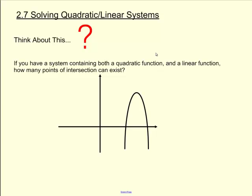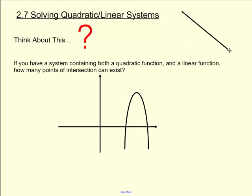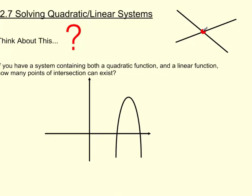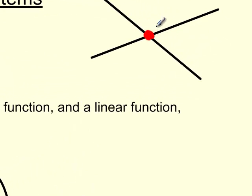There are a couple of possibilities. You could have two lines intersecting that would meet at one spot. For example, I could have a line right here and another line right here, and then this point of intersection we would call the solution.